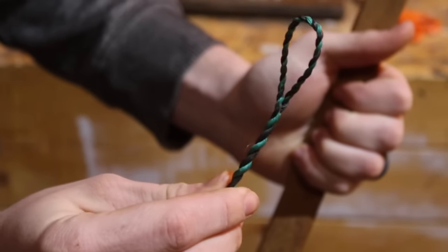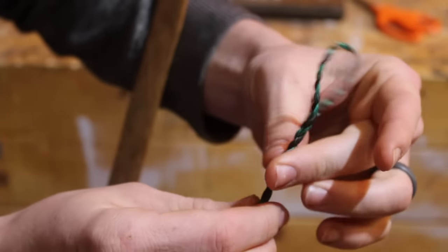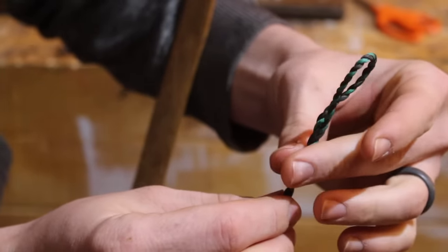Now, if your string does not come out exactly where you want it, all you've got to do is twist the string tighter to make it shorter or opposite, twist the string a little looser to make the string longer and it should be close enough that you can get the string length you want.